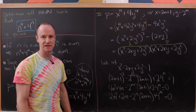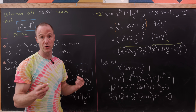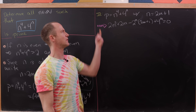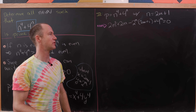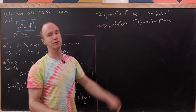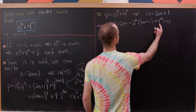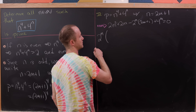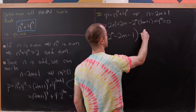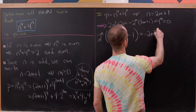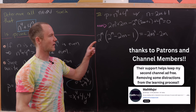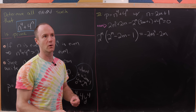Starting from that equation, we move 2m squared plus 2m to the other side and factor 2 to the m out of what's left. This gives: 2 to the m times (2 to the m minus 2m minus 1) equals negative 2m squared minus 2m. The right-hand side is less than or equal to zero.